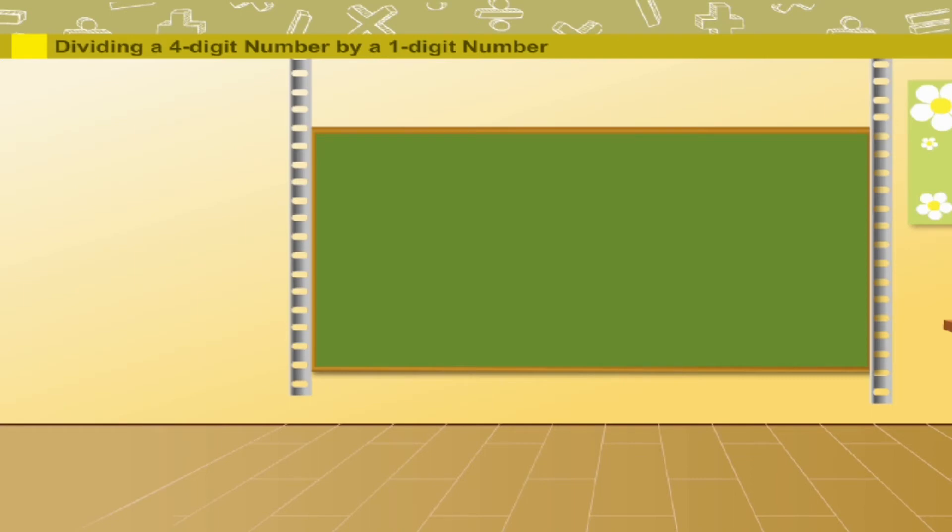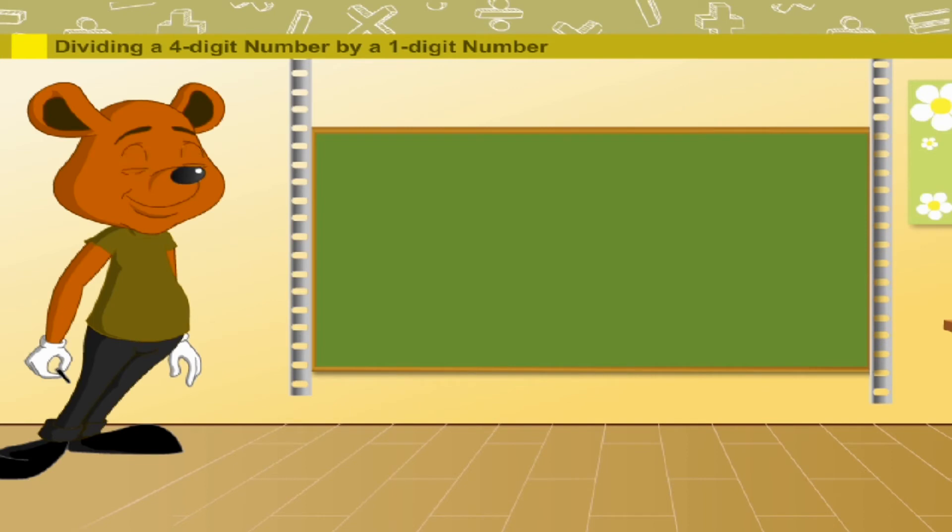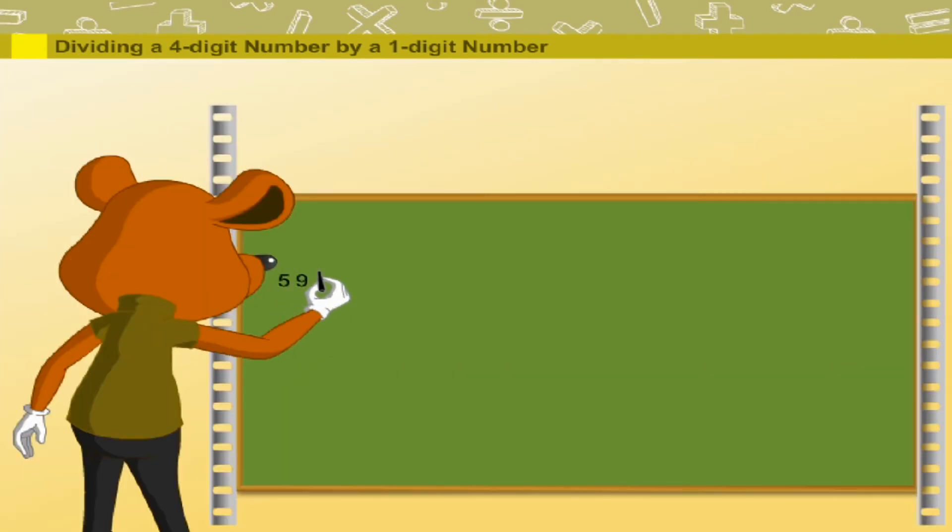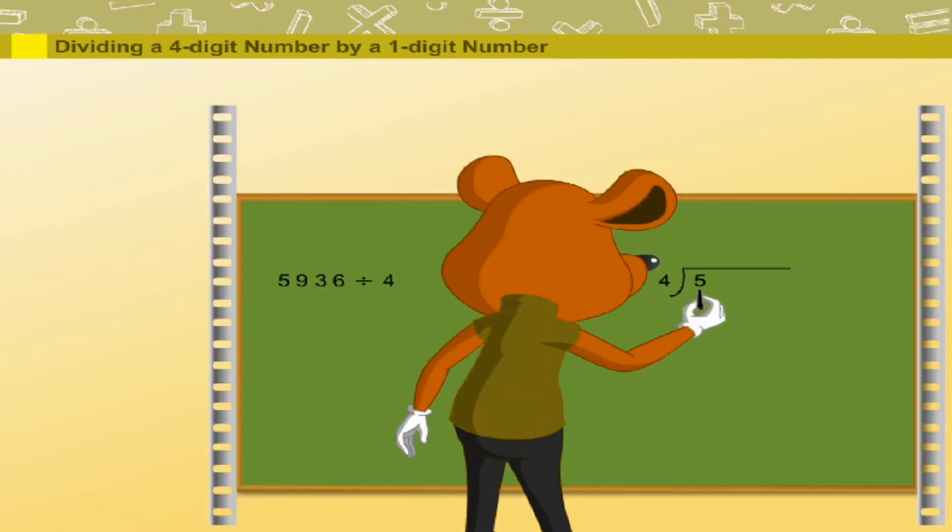Dividing a 4 digit number by a 1 digit number. Robby mouse has a new question. It is 5936 divided by 4. Robby uses the long method. 4 can divide 5 once. So, 1 quotient and remainder 1. Copy 9.